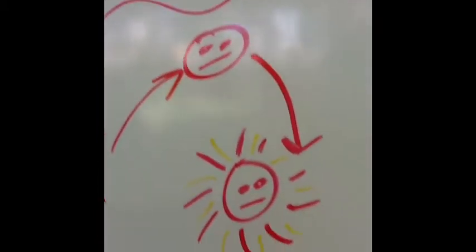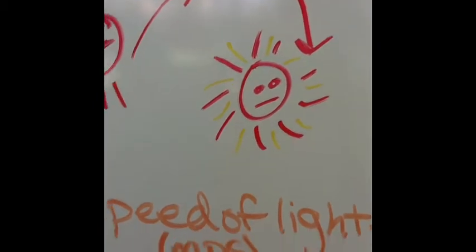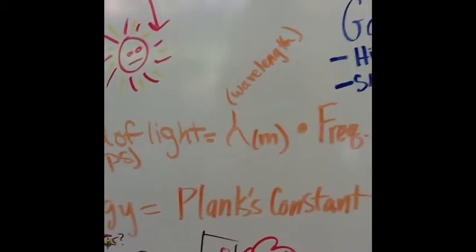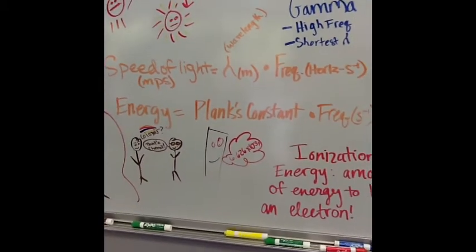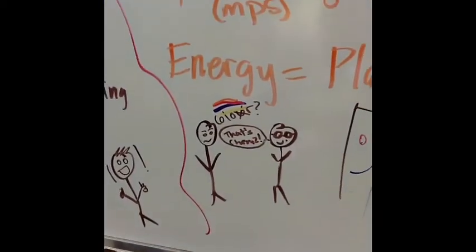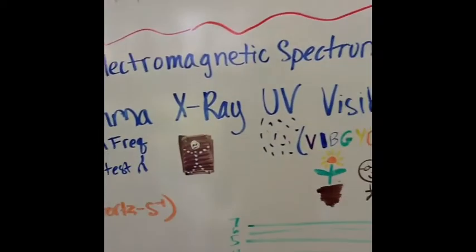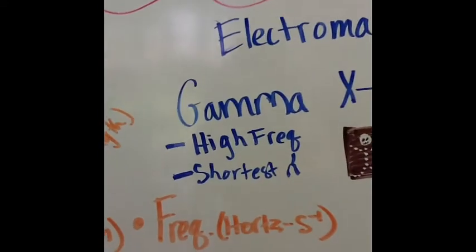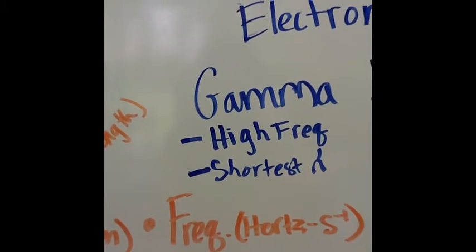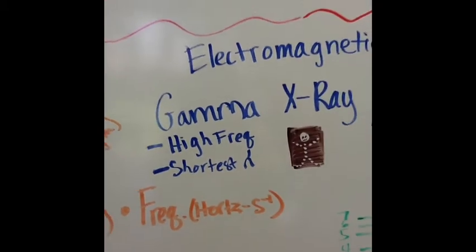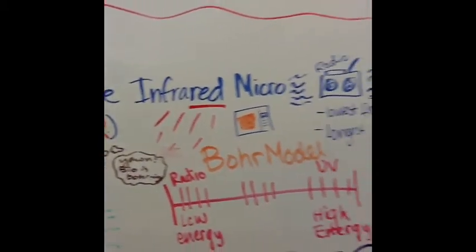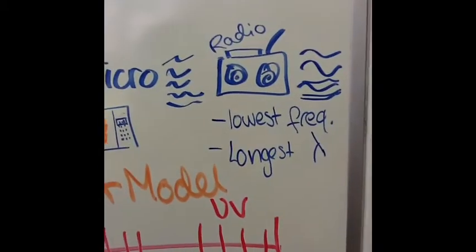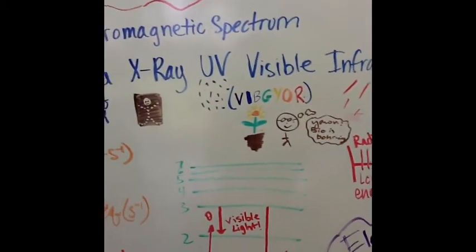When electrons jump from high energy levels to low ones, they emit energy in the form of light. The speed of light in meters per second equals wavelength in meters times frequency in hertz. And energy equals Planck's constant times frequency. The electromagnetic spectrum includes all frequencies of light. The light with the highest energy and smallest wavelength is on the left — from gamma to X-rays to UV to visible to infrared to microwaves and radio waves. Radio waves have the smallest energy and frequency but the longest wavelengths.